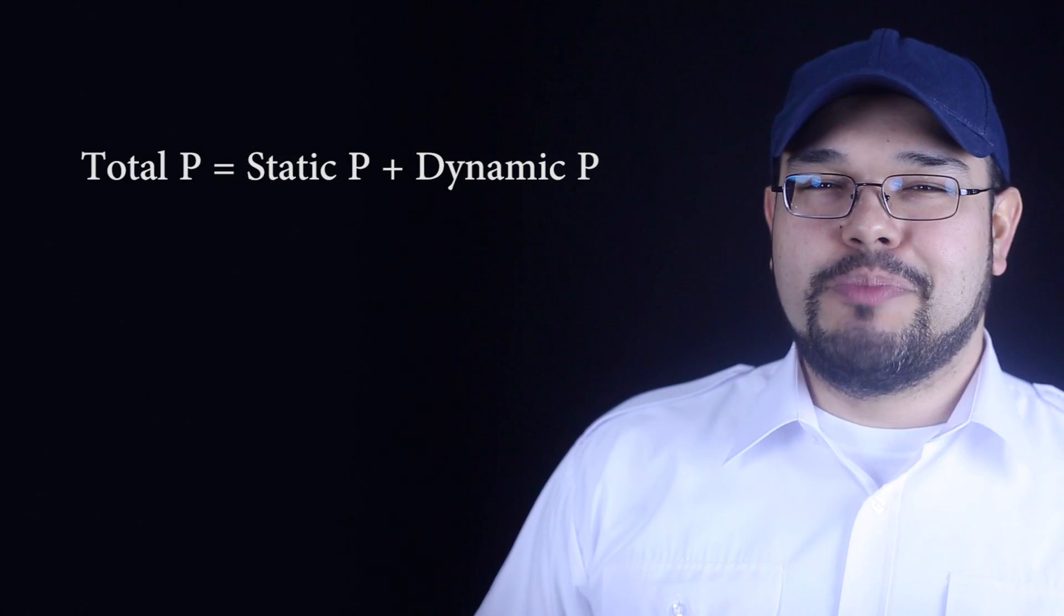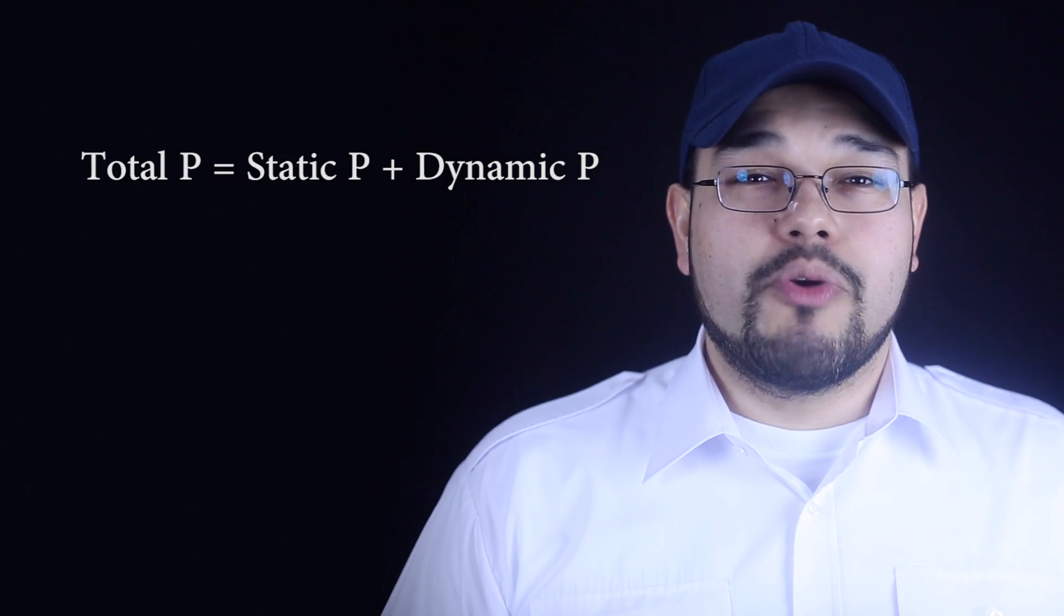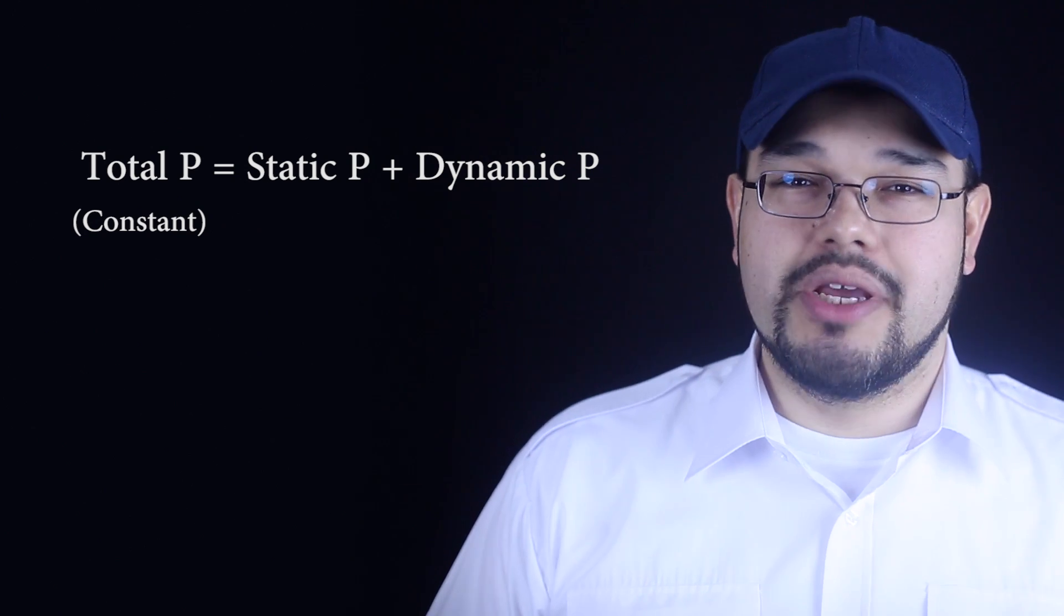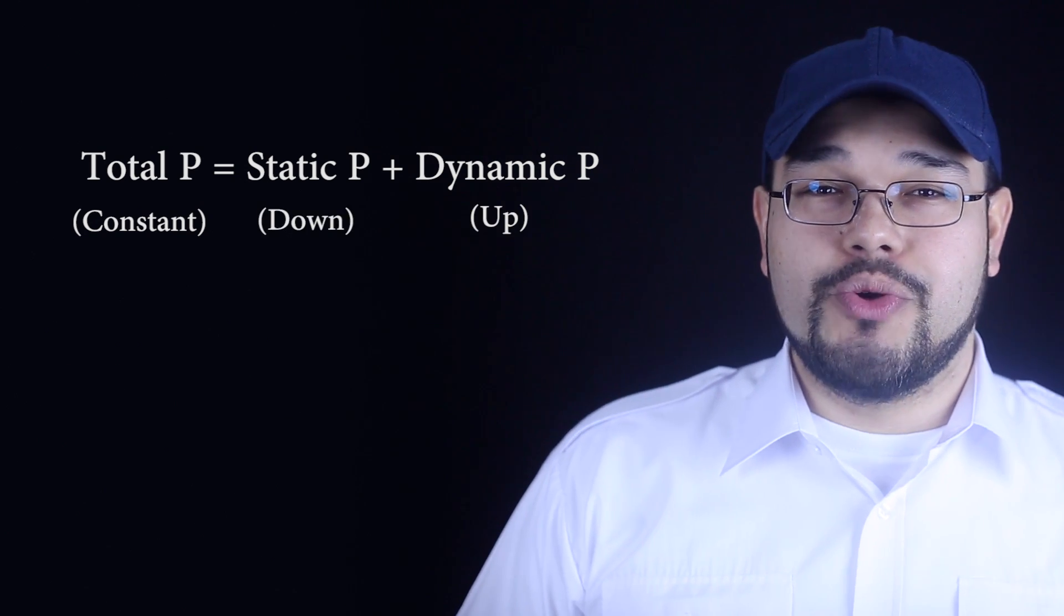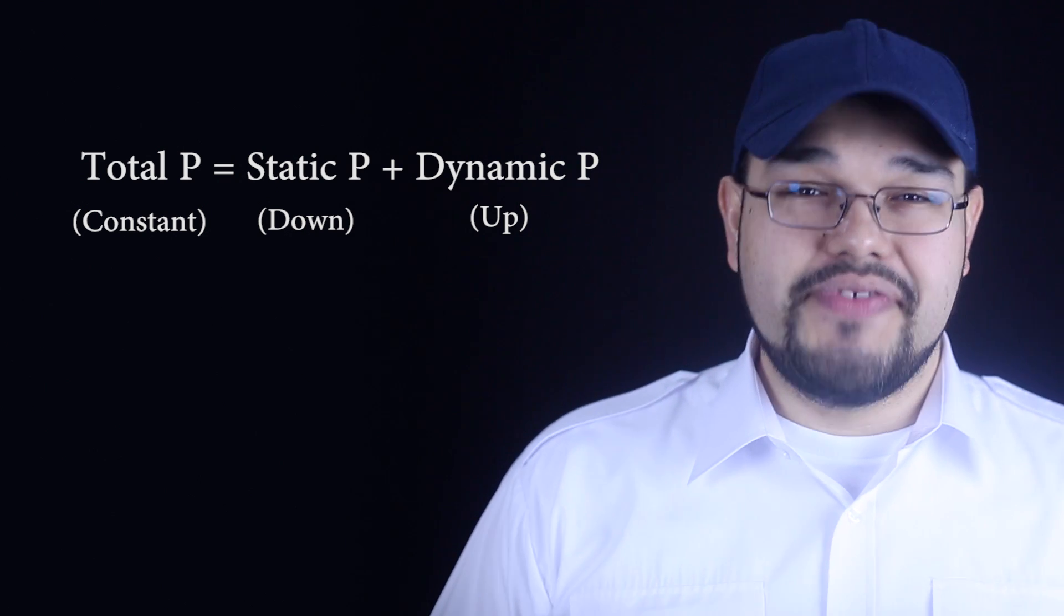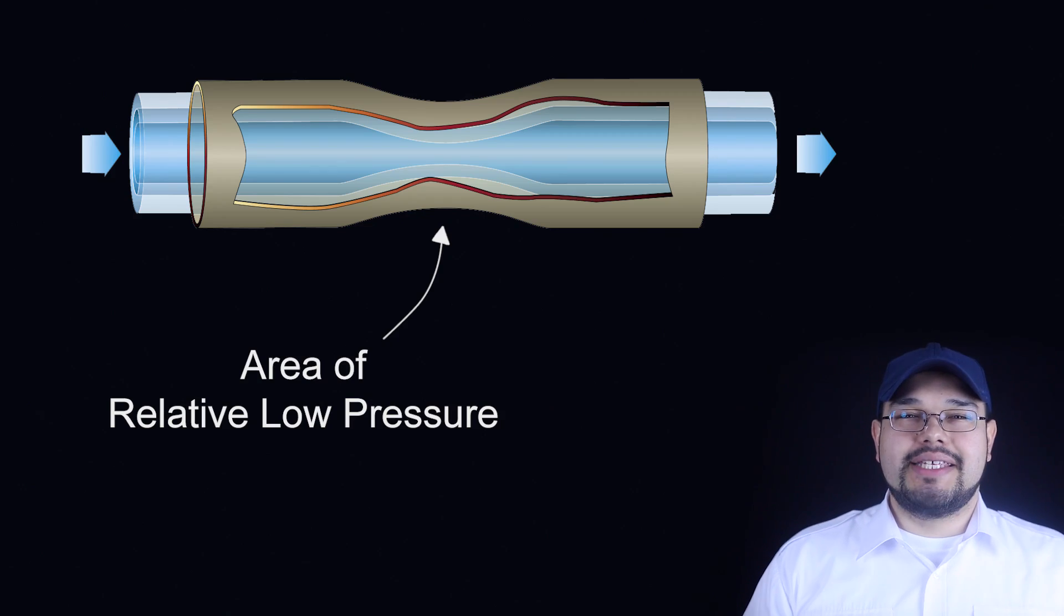Now going back to Bernoulli's principle. The total pressure of the system remains constant. It hasn't changed, but dynamic pressure went up, so something's gotta give. So static pressure goes down, and an area of low pressure actually develops. So right where the pipe gets narrow, we have an area of relative low pressure. Well that's all great, but what's the point?